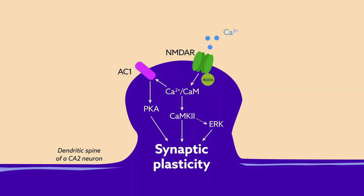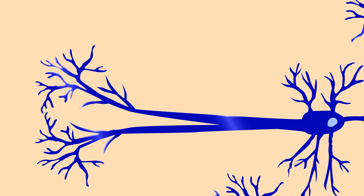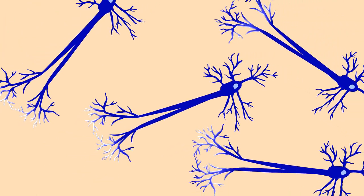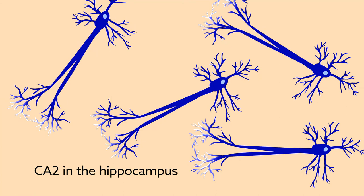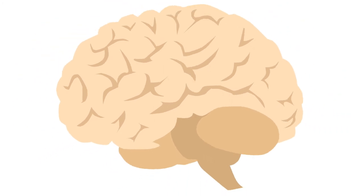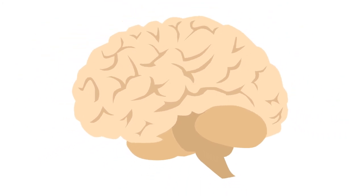These findings are the first to functionally implicate RGS14 as a regulator of calcium signaling in CA2 neurons. By identifying new mechanisms through which plasticity is gated by RGS14 in this recently appreciated region of the brain, this work brings us one step closer to understanding how CA2 neurons may resist plasticity to help encode specific types of long-term memory.